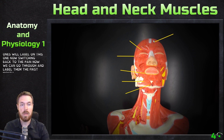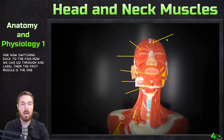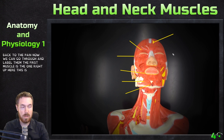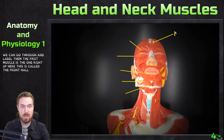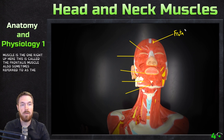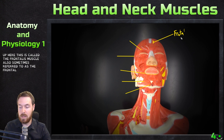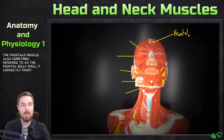The first muscle is the one right up here. This is called the frontalis muscle, also sometimes referred to as the frontal belly. Let's spell it correctly: frontalis.